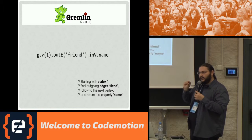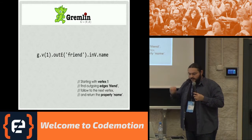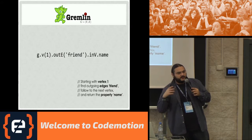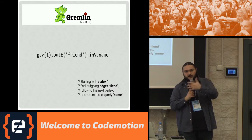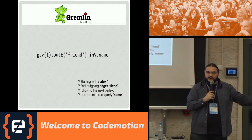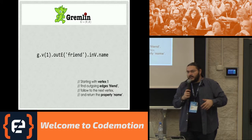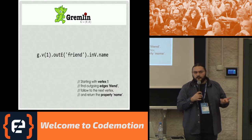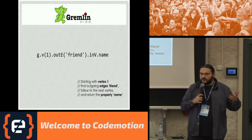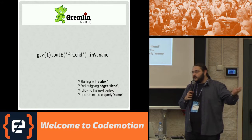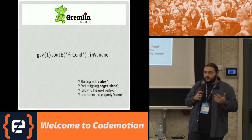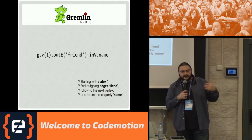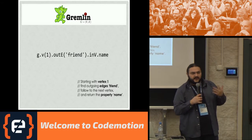Gremlin is a generic language that supports multiple database backends. You can run the same Gremlin query on Neo4j and on OrientDB. Obviously performance will differ because each database executes the query differently, but the high-level language is very helpful when designing and building. There's even a plugin for Gremlin written by someone at Couchbase that runs on Couchbase — it runs terribly, obviously, because it's not a graph database, but it does run.